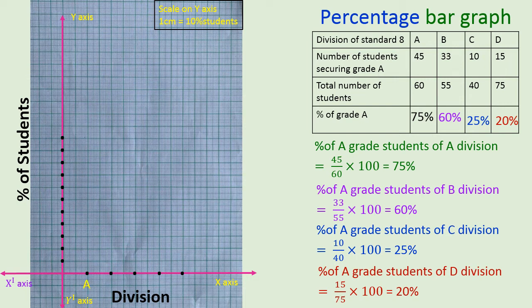So naming of the points: A division, B division, C division, D division. Then on Y axis 10%, 20%, 30%, 40%, 50%, 60%, 70%, 80%, 90%, 100%. So we have got all 100 marking there.